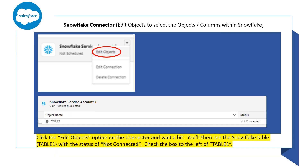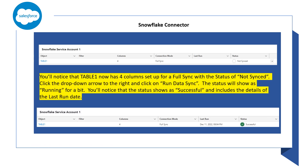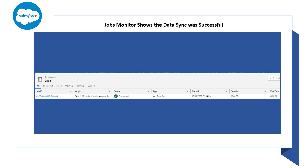Once you click the edit objects option on the connector, you'll see the Snowflake table available for you to check the box to the left. You'll want to select all four columns and then resolve any issues such as precision by using the pencil to the right of the values. Click the drop-down arrow to the right and then click on run data sync. The status will show as running for just a bit and then you'll notice that the status shows as successful. You can also check the job monitor and see the status shows that the sync was successful.